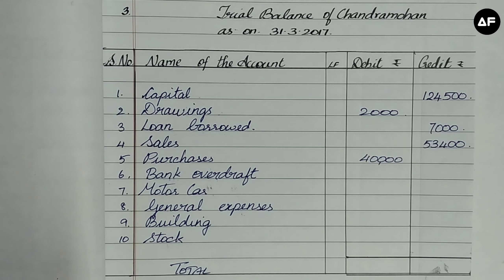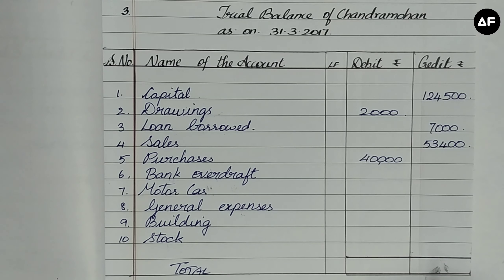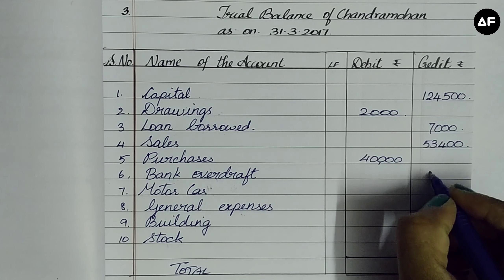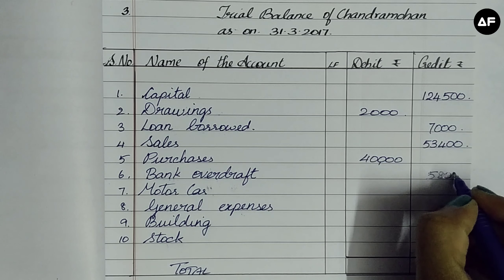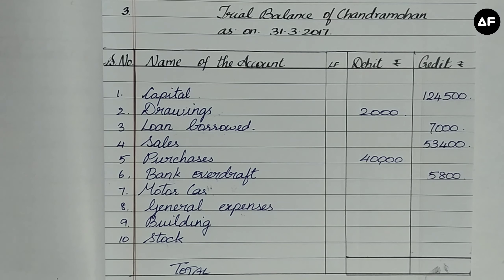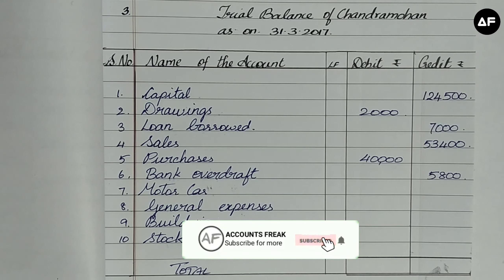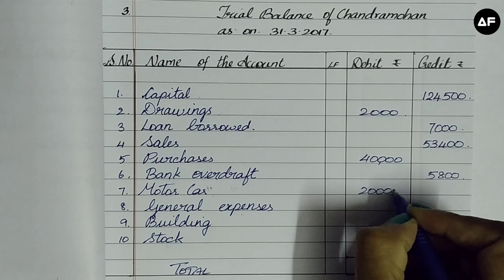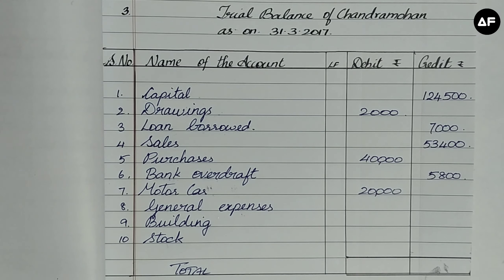Bank overdraft is where we withdraw money from the bank over the limit in our account — since we have to repay the bank the excess amount withdrawn, 5,800 goes into the credit column. Next is motor car of 20,000 — motor car is an asset, a property for us, therefore the 20,000 comes on the debit side.